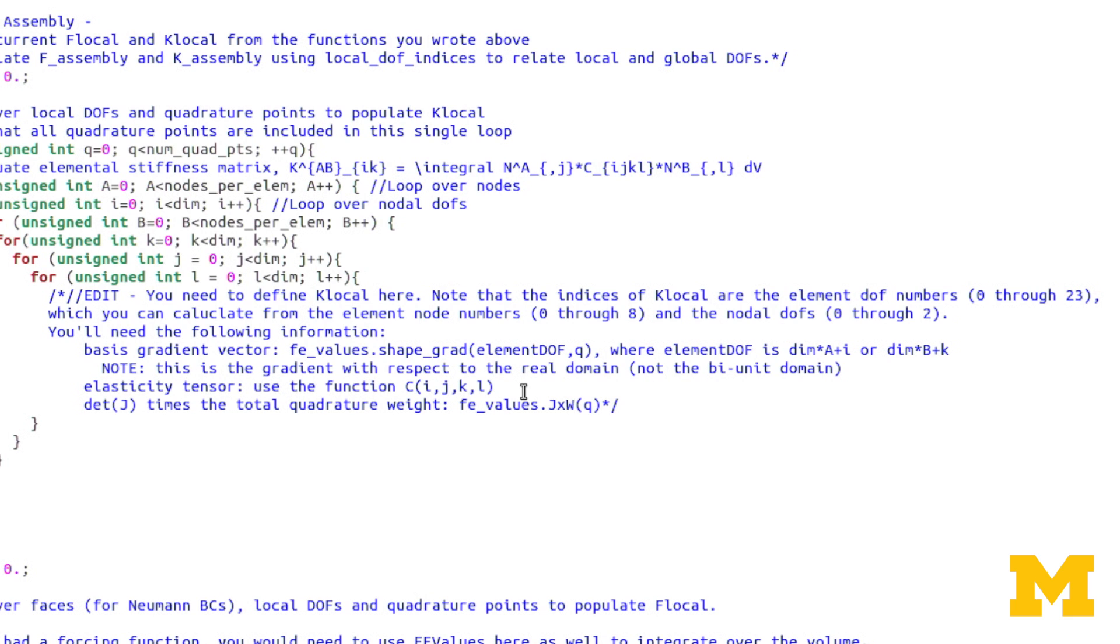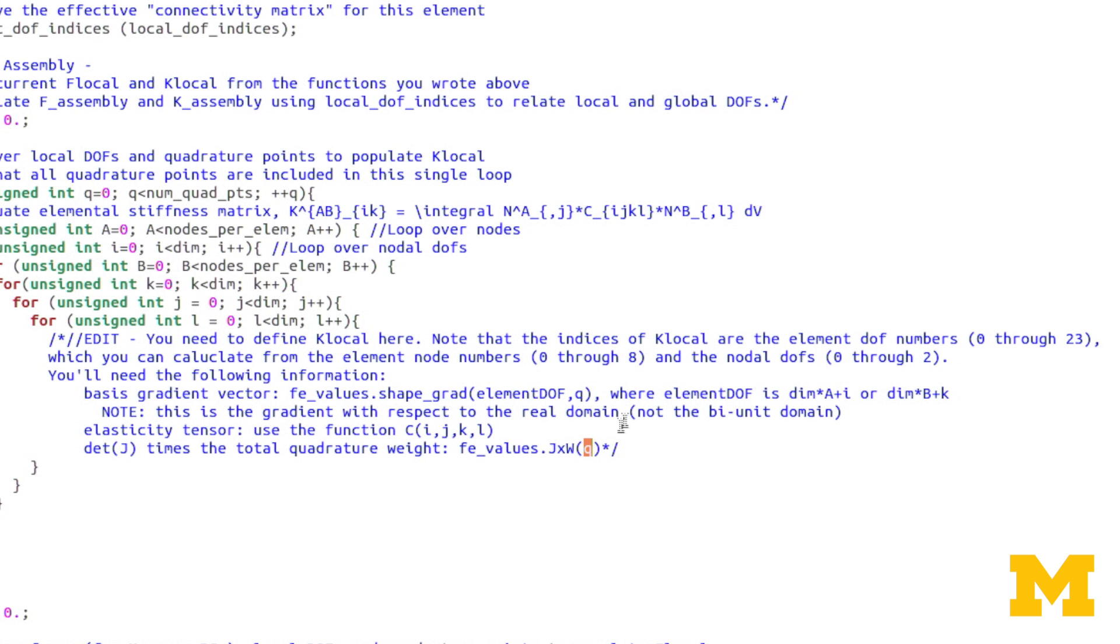So in order to access that gradient, you do FeValues.ShapeGrad, and then you'd input the element degree of freedom. Now notice that's a little bit different than what we've written on the board here. In the lectures, we always use the element node number to designate what basis function we're using. Here in deal 2, it's the element degree of freedom. So it will be the same as whatever index you're using in Klocal. So this wouldn't be, for example, this wouldn't be A, this would be 3A plus I. And this wouldn't be B, it would be 3B plus J for deal 2. Sorry, not J, plus K.